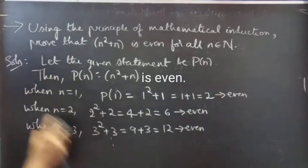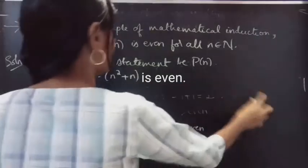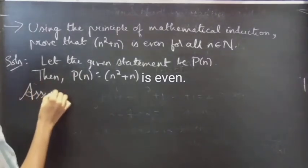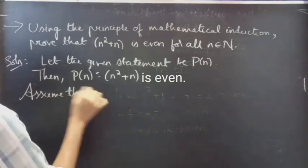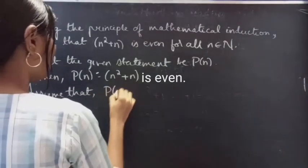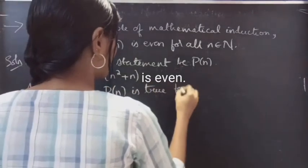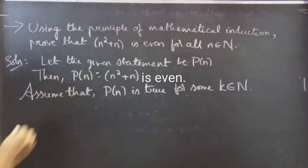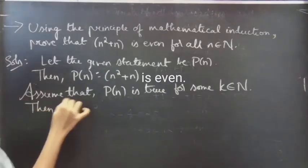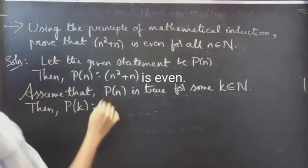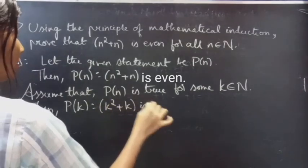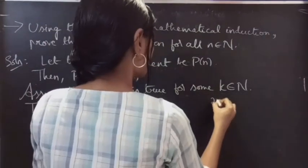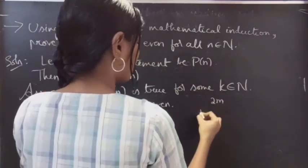Now let's assume that the given statement is true for some k belonging to natural numbers. We assume P(k) is true, meaning k squared plus k is even.